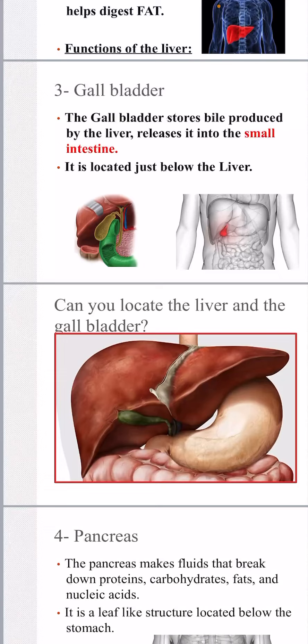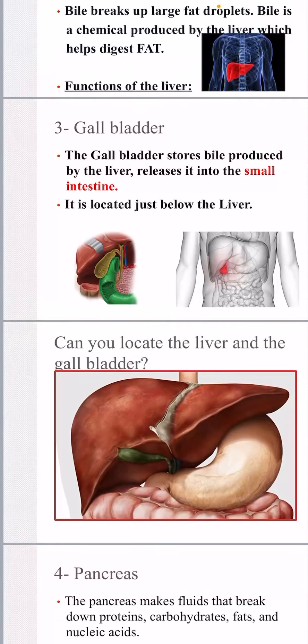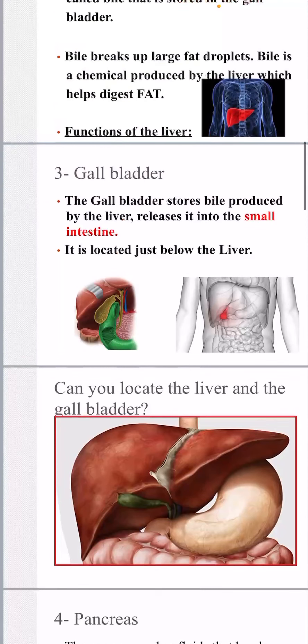The third accessory organ is the gallbladder. The gallbladder stores the bile produced by the liver and releases it to the small intestine to help in chemical digestion. You should know its anatomy: the gallbladder lies just below the liver and has a green or yellowish-green color.